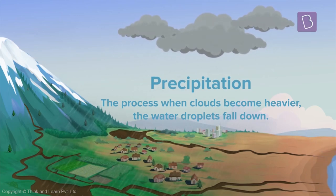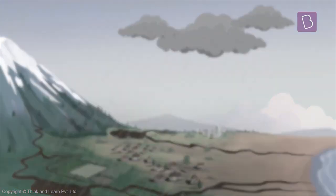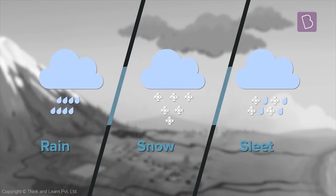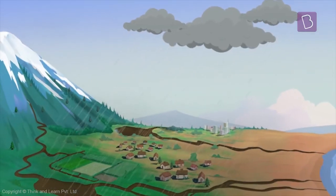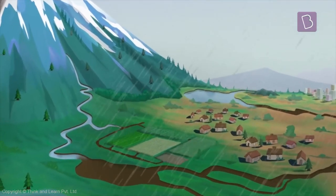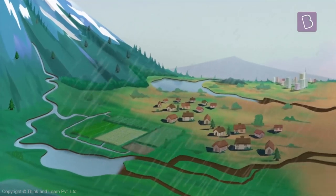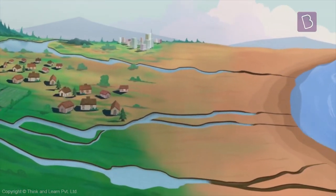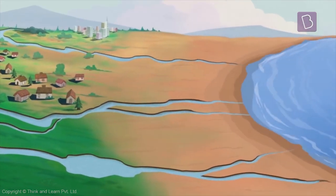Precipitation can occur in different forms like rain, snow, sleet, etc. Through precipitation, water has found its way back to the ground. It continues to flow back into oceans, streams, rivers, and lakes.